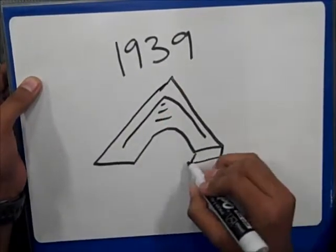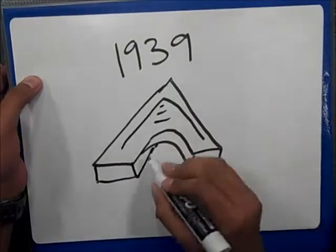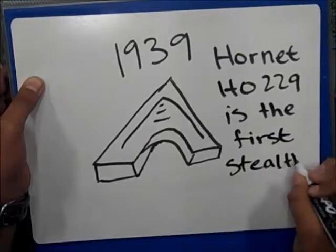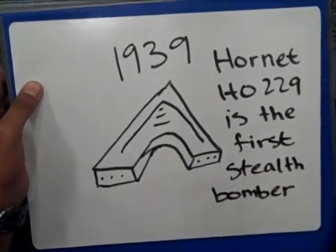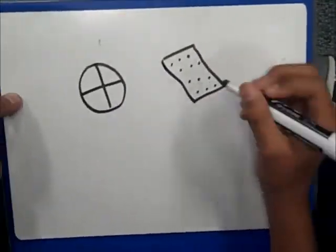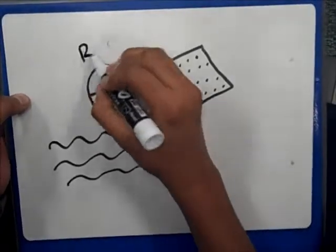It was the first Stealth Bomber. This plane was undetectable to radar and infrared. It also was undetectable to radio frequency.